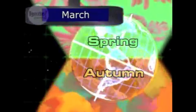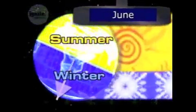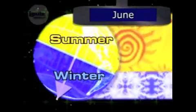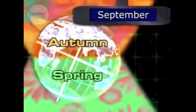In March, the northern hemisphere has spring and the southern has autumn. In June, the northern has summer and the southern has winter. In September, the northern has autumn and the southern has spring.